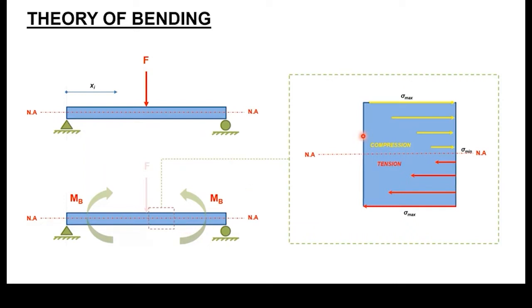At the neutral axis, the value of stress will be at its minimum, which is equal to zero. So at the neutral axis, there won't be any increase or decrease in stress — stress will be equal to zero.